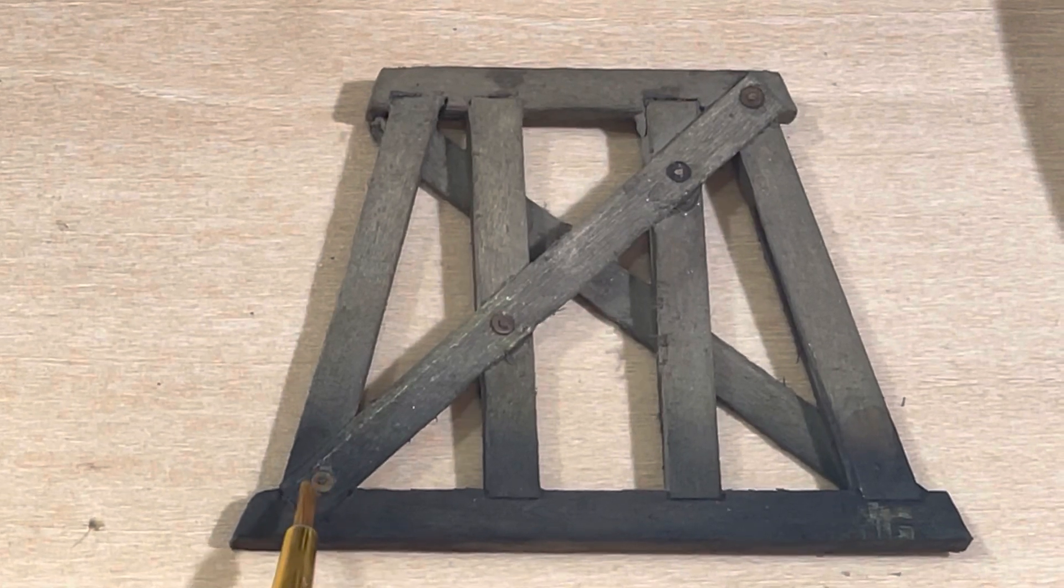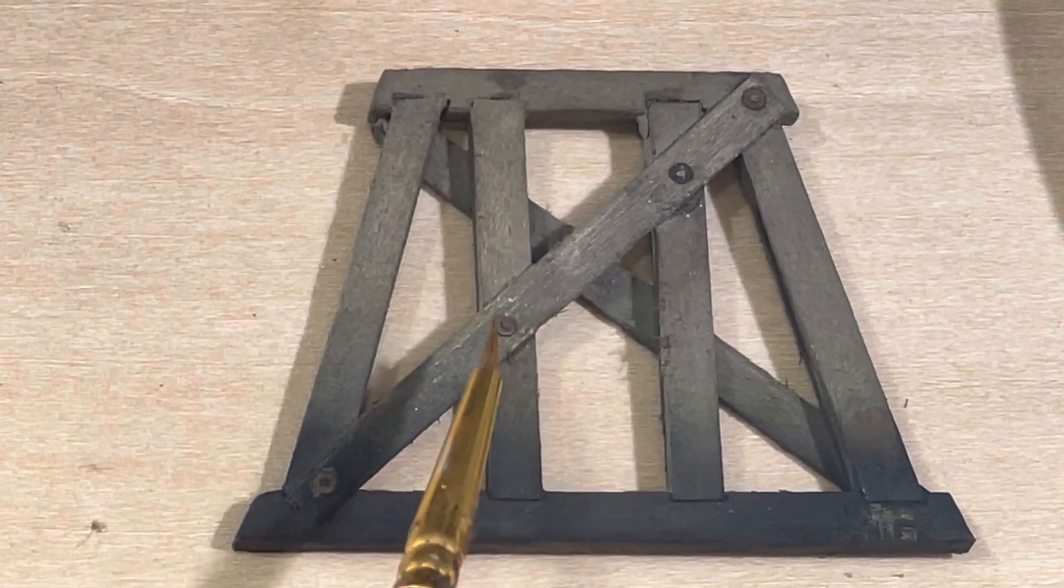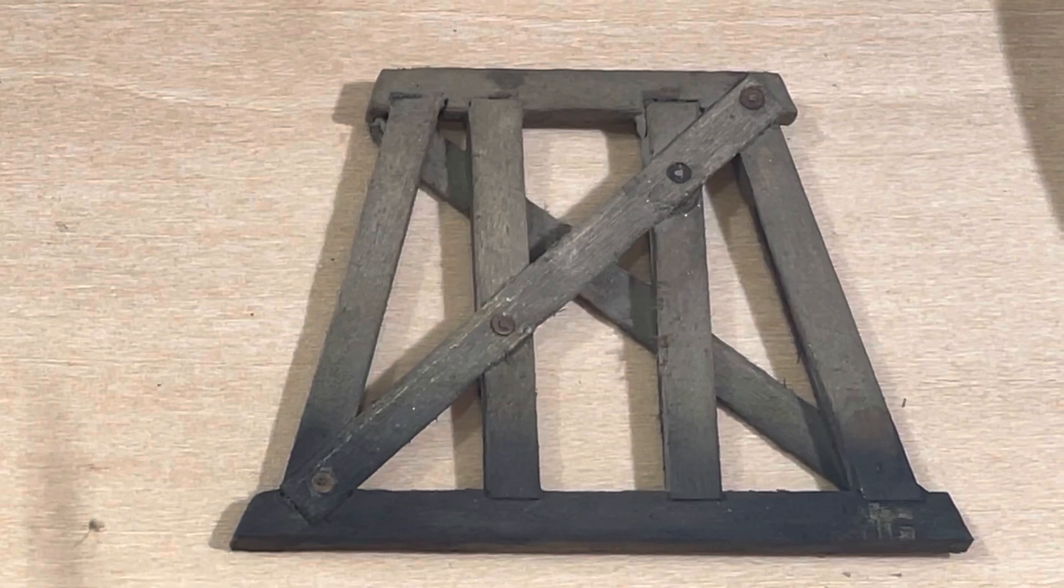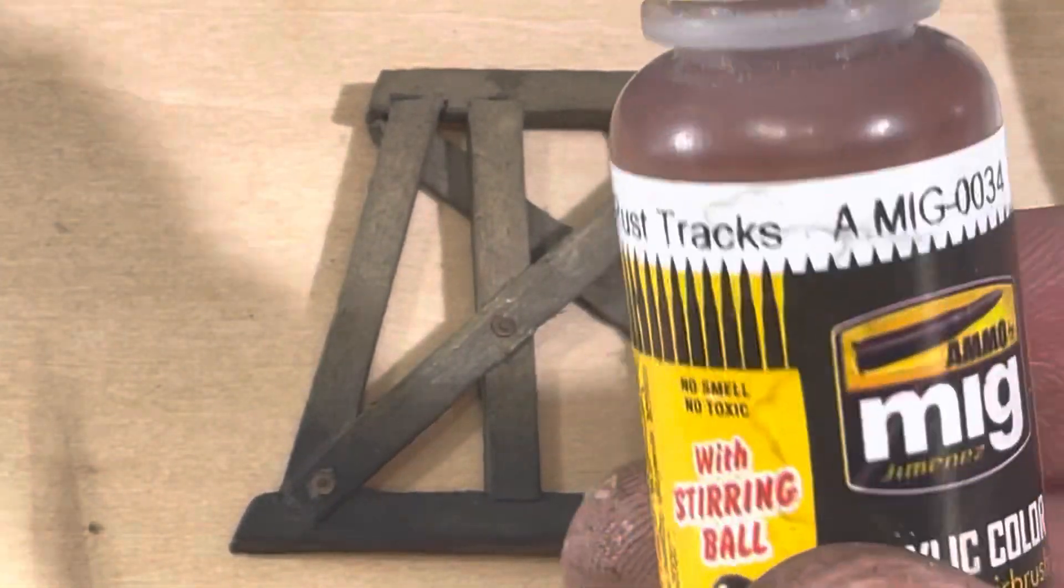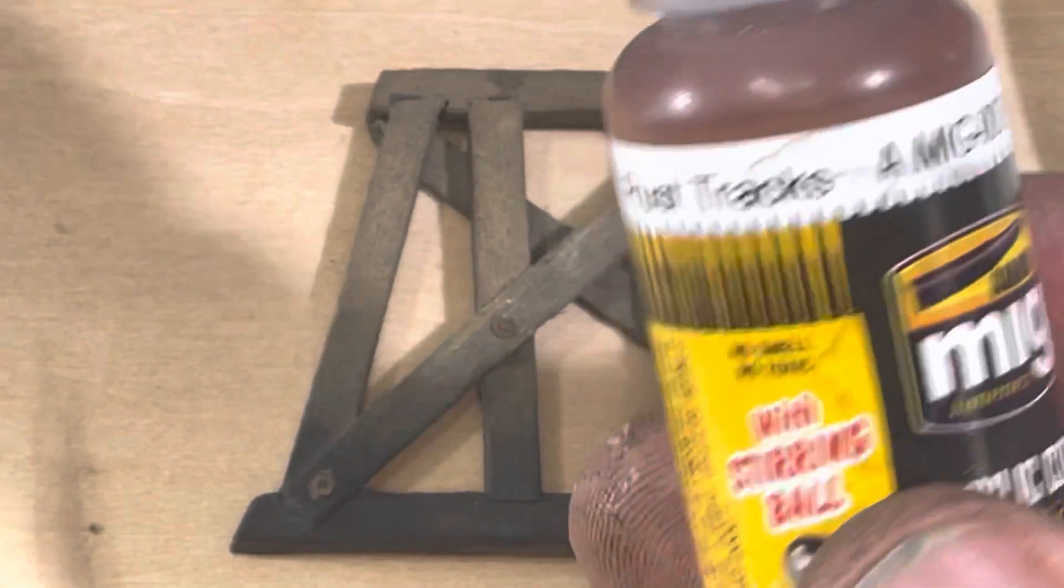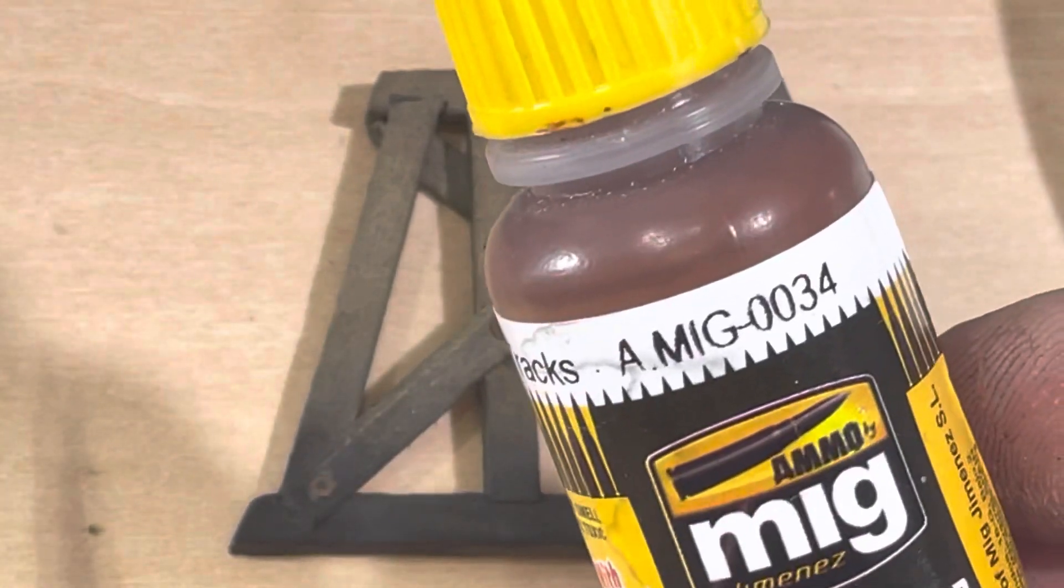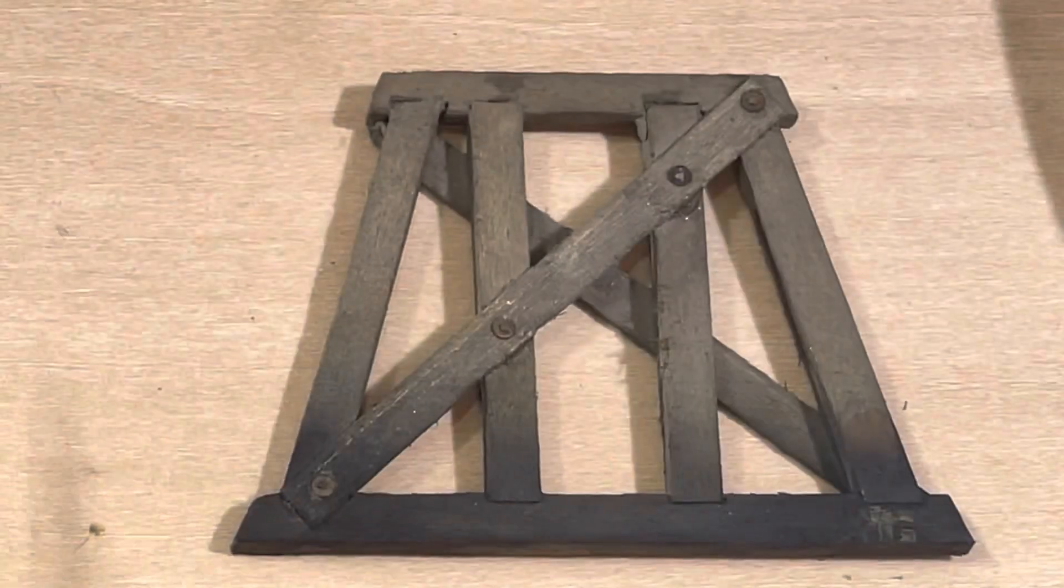You can see the construction paper washers here, brown construction paper. I touch it with a little bit of Ammo Rust Tracks, that's a MIG 0034. It's kind of like a dark terracotta.